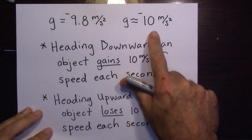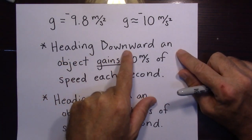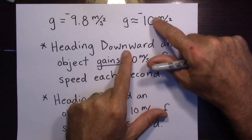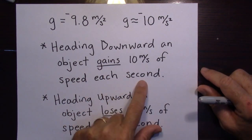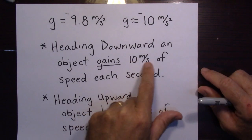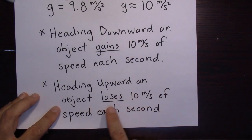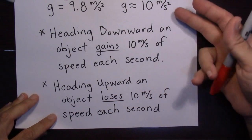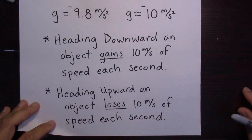A couple of things about an acceleration of negative 10 meters per second squared: the negative means downward. If an object is heading downward — meaning its velocity is negative — and the acceleration is also negative, then the object is gaining speed at 10 meters per second every second. But if the object is heading upward, it has a positive velocity and a negative acceleration, so it's losing 10 meters per second of speed every second.